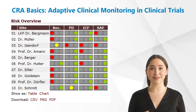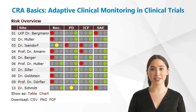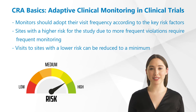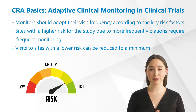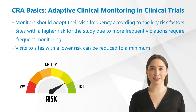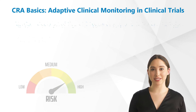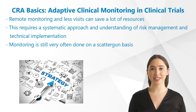This can save costs, because sites with fewer measured key risk factors have to be visited significantly less often. Monitors should adapt their visit frequency according to the development of the key risk factors. Sites with a lower risk can be reduced to a minimum, and a lot of data can be checked by remote monitoring. Such sites can only be randomly visited to perform source data verification, saving a lot of resources.